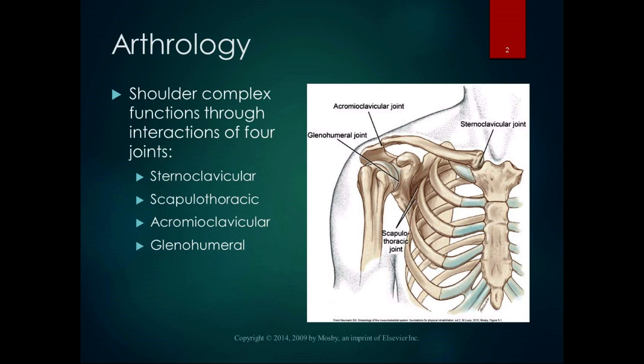My favorite shoulder joint interaction story recently: one person had an infection at their sternoclavicular joint, which they had to have surgically debrided twice, and it really restricted motion at their glenohumeral joint. So after they recovered from the infection, we had to work on regaining motion in the glenohumeral joint.